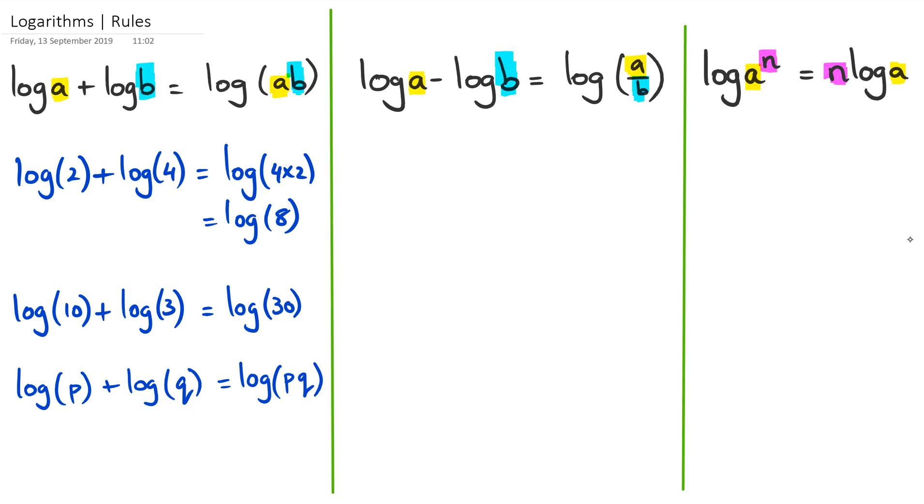So next thing is looking at division. If we have something like log of 12 take away log of 3, then we rewrite this as log of 12 divided by 3, which equals log of 4.